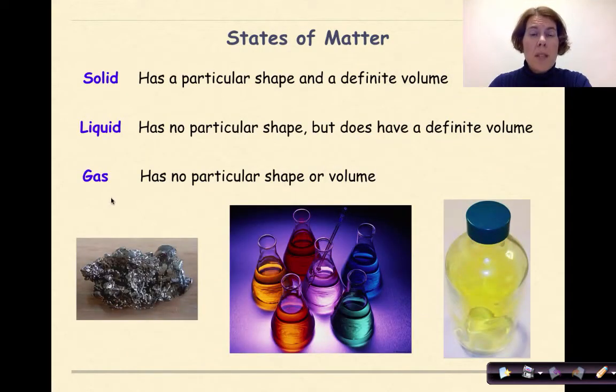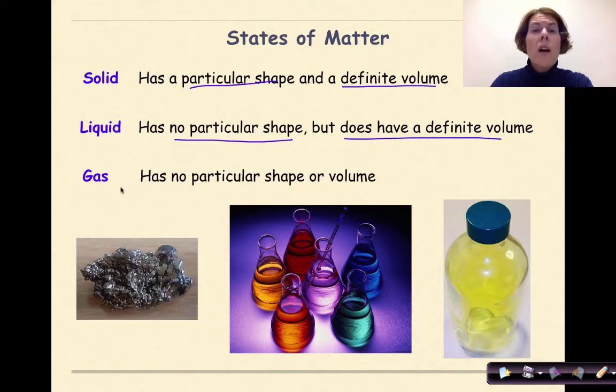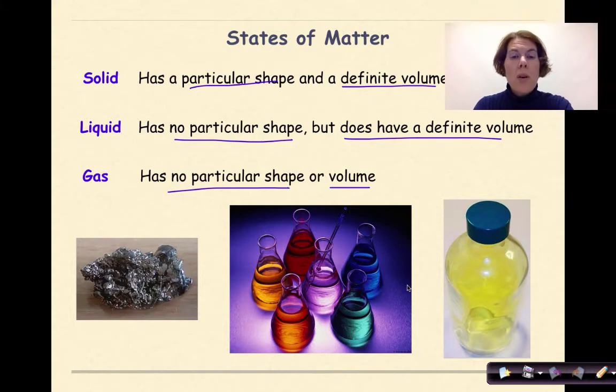There are three different types of states of matter that we look at in this course. A solid has a particular shape and a definite volume. A liquid has no particular shape but does have a definite volume. And finally, a gas has no particular shape or volume. And we can see our three examples below.